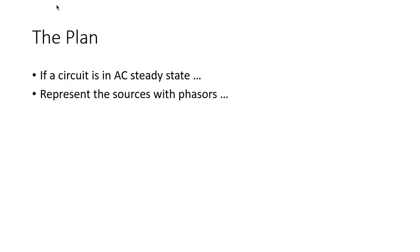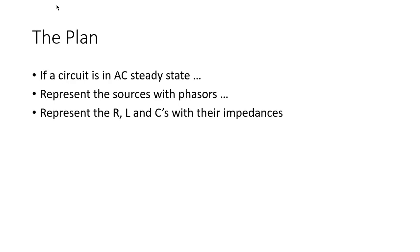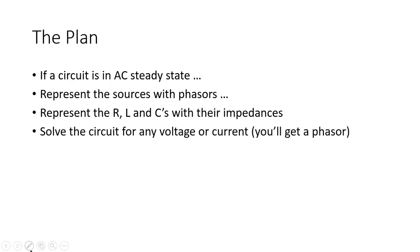In that case, we represent all sources with phasors, with complex numbers, and we represent resistors, inductors, and capacitors with their impedances. Let's review what I mean by that. The resistance of a resistor is its resistance, so no surprise there. The resistance of an inductor is jωL.